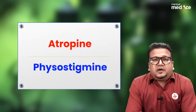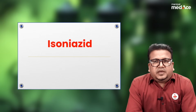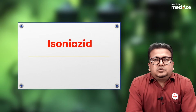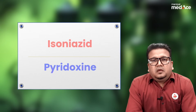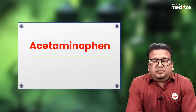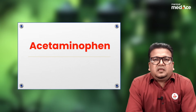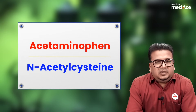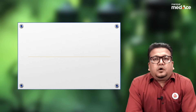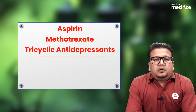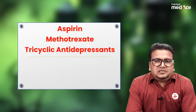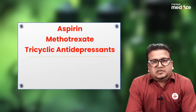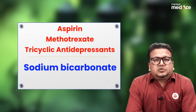For atropine poisoning itself, physostigmine is the drug. For isoniazid-induced peripheral neuropathy, use pyridoxine or Vitamin B6. For acetaminophen or paracetamol toxicity, use N-acetylcysteine.